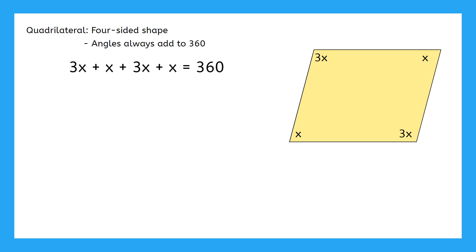To solve, we're going to combine all of these terms together to make 8x. Then we just divide both sides by 8, and we get that x is 45.